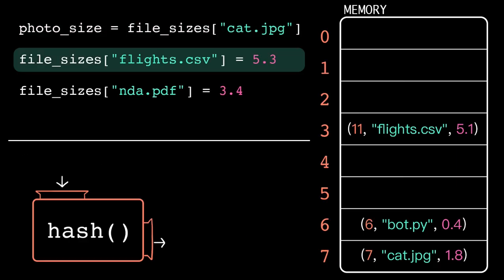This assignment statement reassigns the value associated with the key flights.csv. So, again, we hash the key flights.csv, take modulo 8, which gives us 3, go to the slot index 3, and verify that the key matches. Since it does, the computer updates the item in this slot to have the value 5.3.